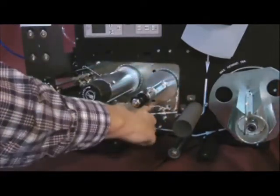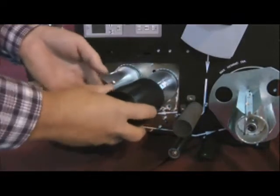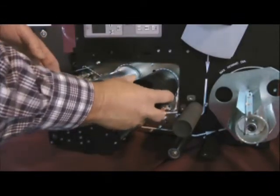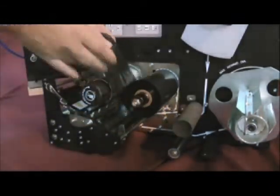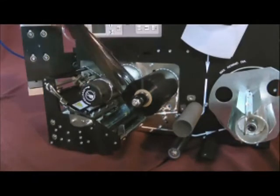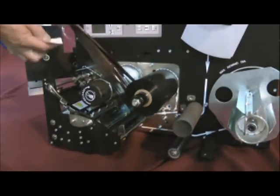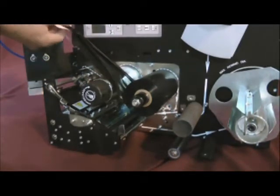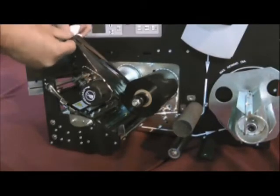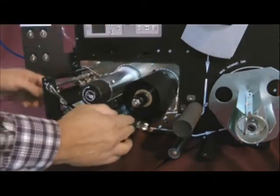Place the ribbon roll on the rear ribbon unwind spindle and have it so the ribbon can be pulled out in the clockwise direction. Pull a length of ribbon out and place a label on the end of the ribbon and fold it over to make a tag for easier loading through the print head engine assembly.